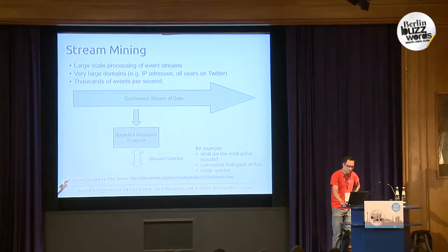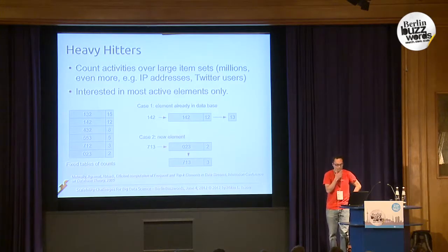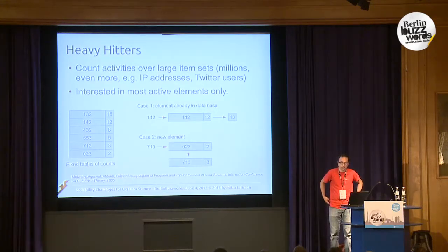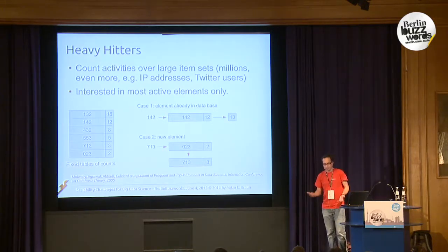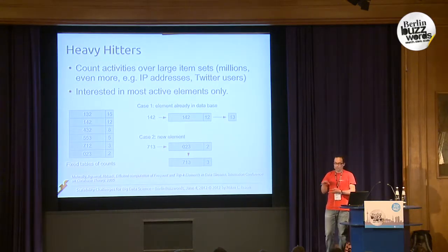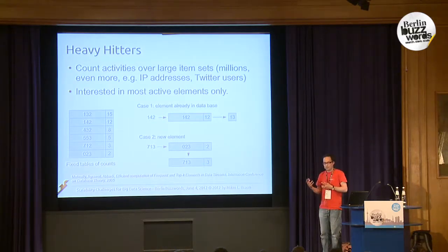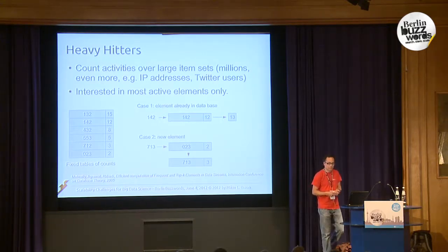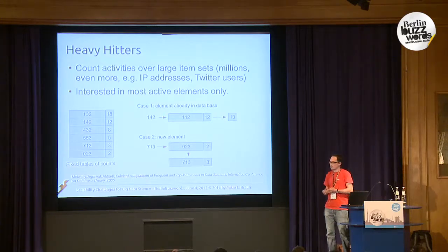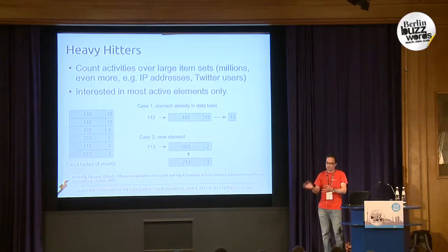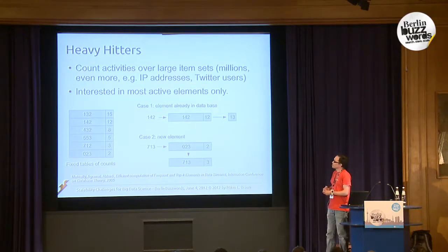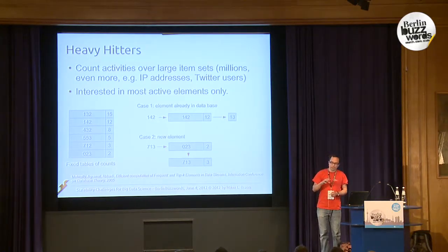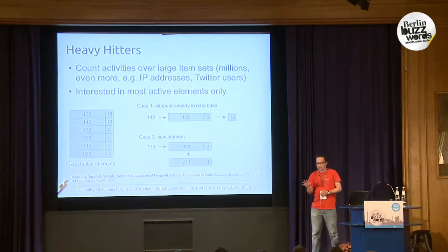I want to show three algorithms typical for stream mining. The first example is heavy hitters: you want to count activities over large item sets. For example on Twitter, counting retweets of all users — millions of people active each day — or Bitly doing analytics on IP addresses it resolves. The classical approach would be a database, but it would be very large. The stream mining approach is that usually you're only interested in the most active ones — say the top 100,000 most active users.